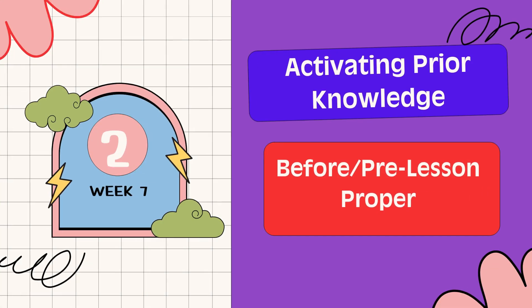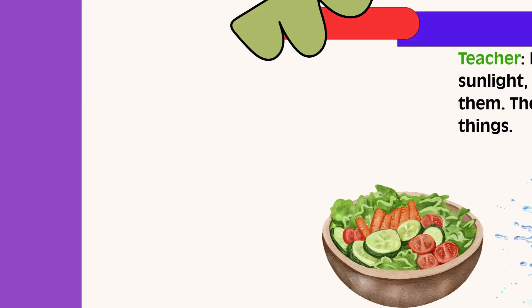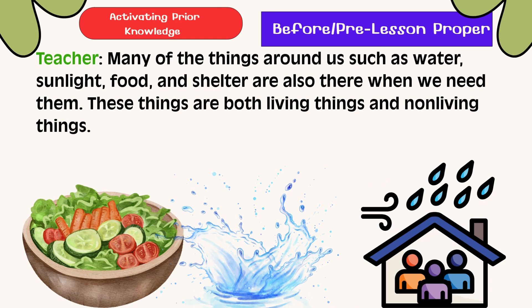Activating Prior Knowledge. Many of the things around us such as water, sunlight, food, and shelter are also there when we need them. These things are both living things and non-living things.